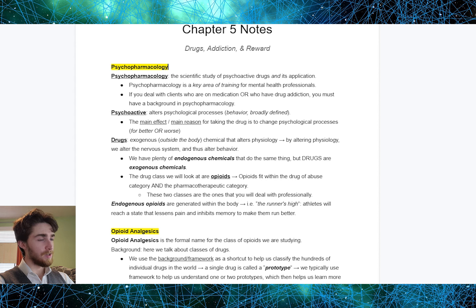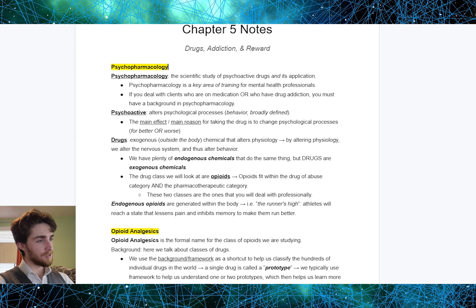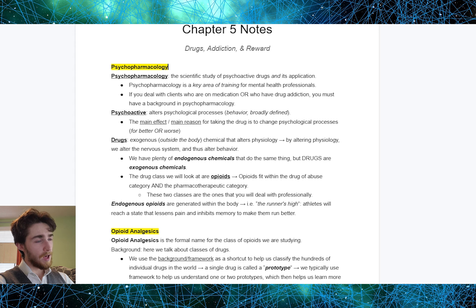The main effect, or the main reason for taking the drug, is to change physiological processes, be it for better or for worse. Drugs are exogenous — they exist outside of the body. We're talking about exogenous chemicals that alter physiology. By altering physiology, we alter the nervous system, and thus we alter behavior. We also have plenty of endogenous chemicals that do the same thing, chemicals inside the body. But drugs are exogenous chemicals that exist outside of the body.